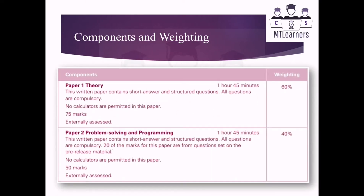The components and weightings of both papers: Paper 1, the theoretical paper, contains short answer and structured questions. All questions are compulsory, no calculators are permitted. This paper is 75 marks, one hour 45 minutes is given, and the weighting of this paper is 60 percent.